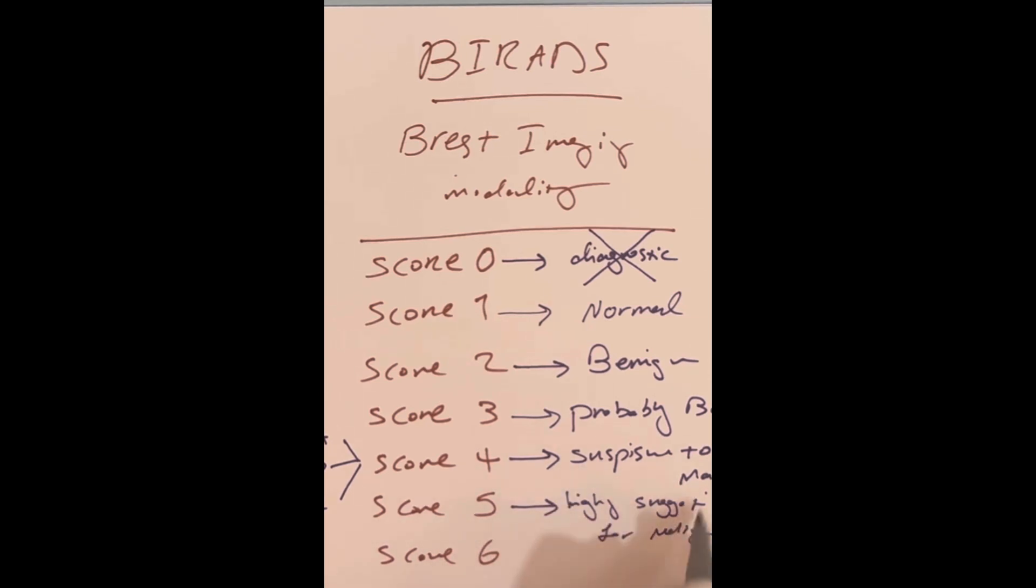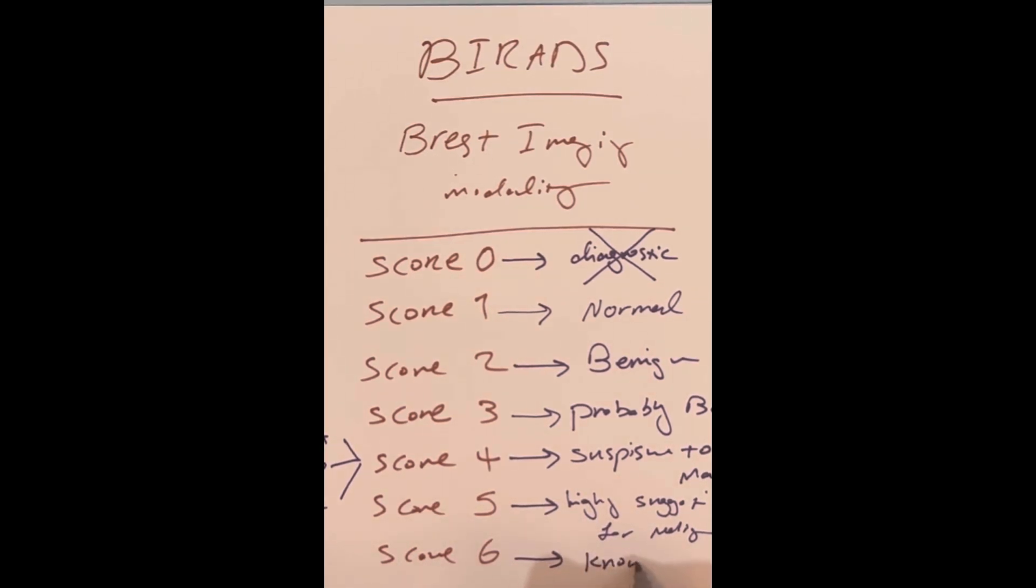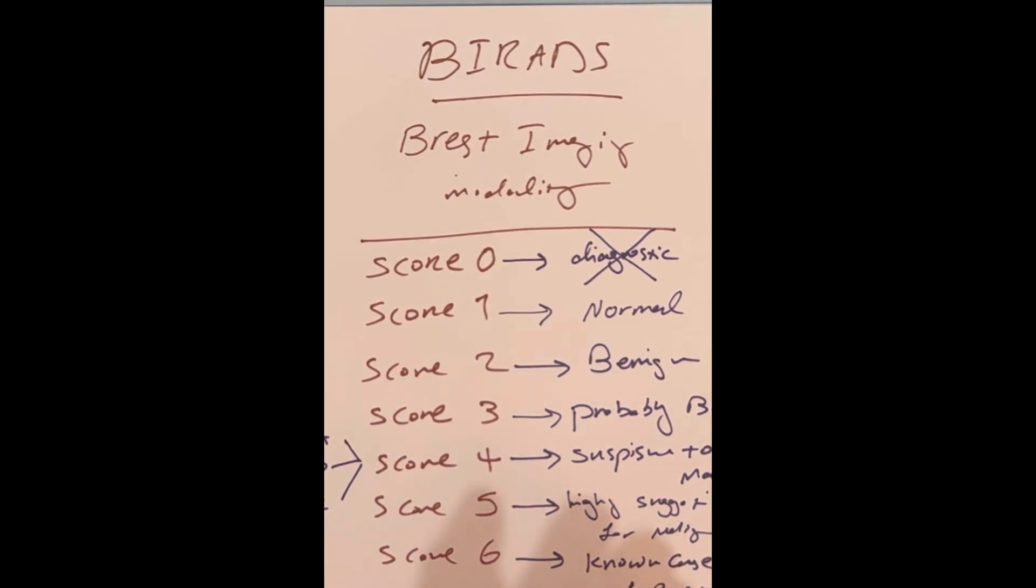Score 6 means it is a known case of breast cancer. You have a pathology that reveals malignancy in the breast, and this modality is done for another reason.